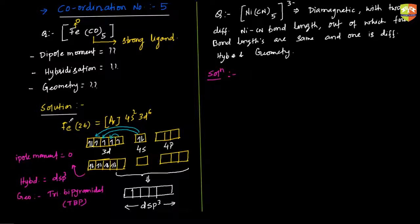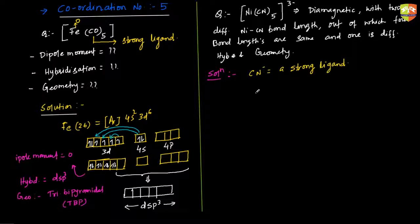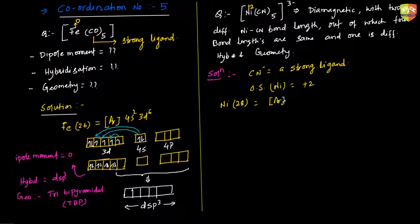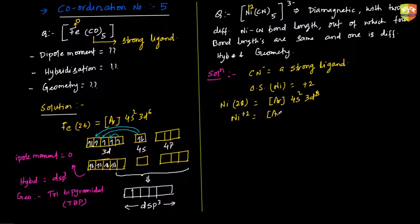The coordination number is five and CN⁻ is a strong ligand. The oxidation state of nickel in this complex is plus two. The atomic number of nickel is 28, so the configuration is [Ar] 4s² 3d⁸. But the metal here is Ni²⁺, so two electrons come out from the outermost shell (4s), giving 4s⁰ 3d⁸.